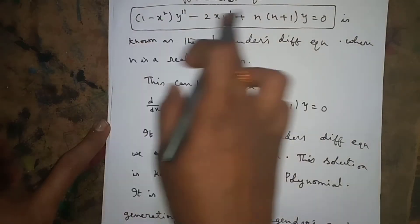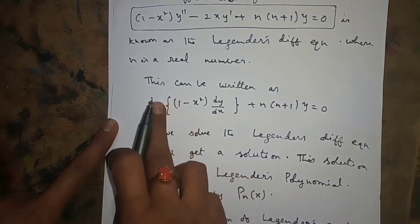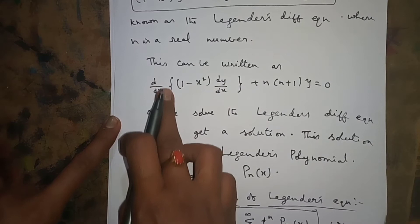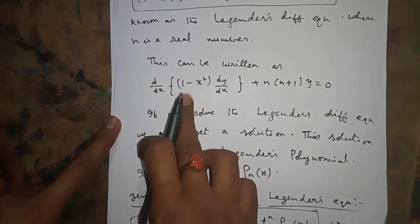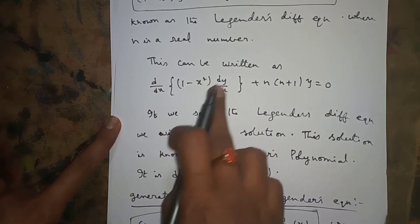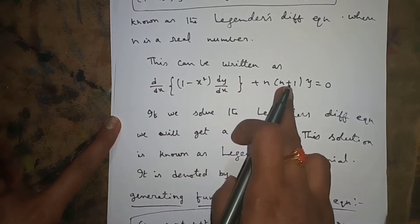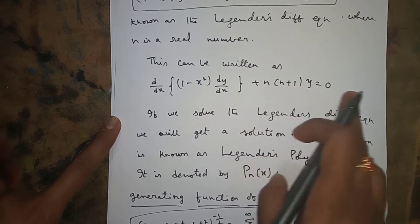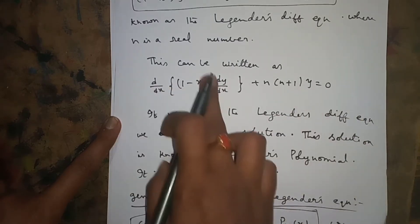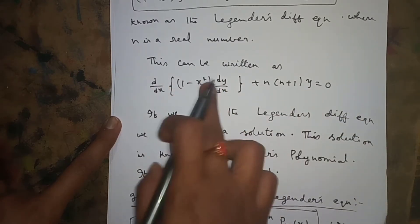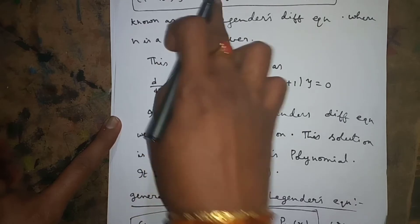This above equation can also be written in the form of d by dx of 1 minus x squared into dy by dx plus n into n plus 1 into y is equal to 0. That means differentiating these two terms gives you this form.